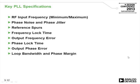Key PLL specifications include the RF input frequency range, phase noise, and phase jitter. When a PLL is used as a local oscillator in an up or down converter, phase noise is the critical specification. However, if the signal is clocking an A-to-D or D-to-A converter, then phase jitter is important — it determines the sampling instant in an A-to-D converter and the uncertainty on that sampling instant.